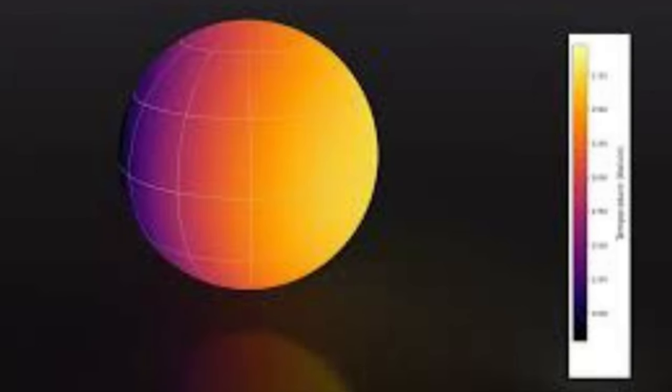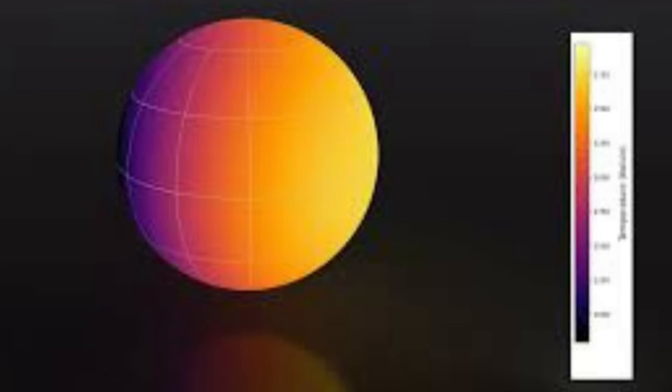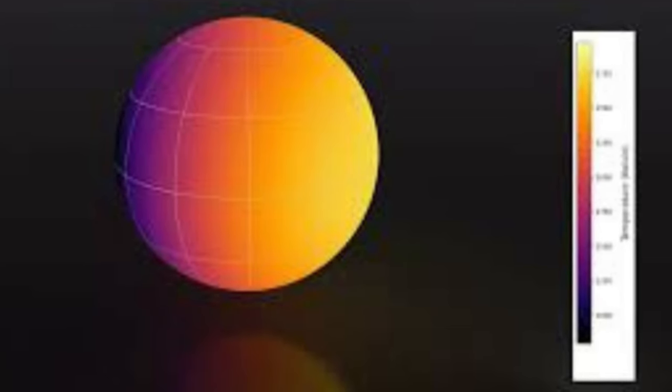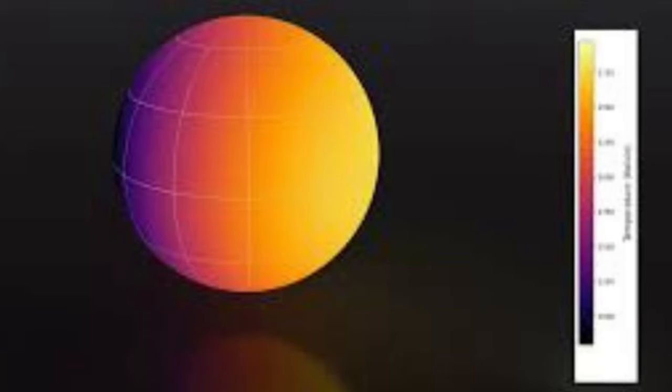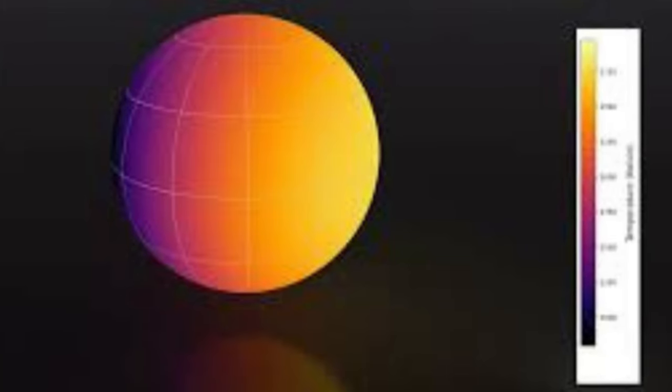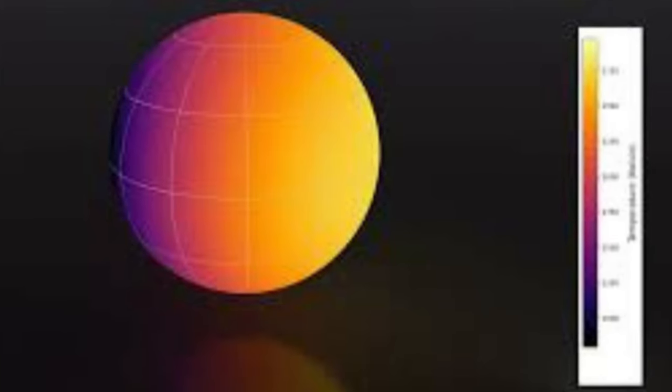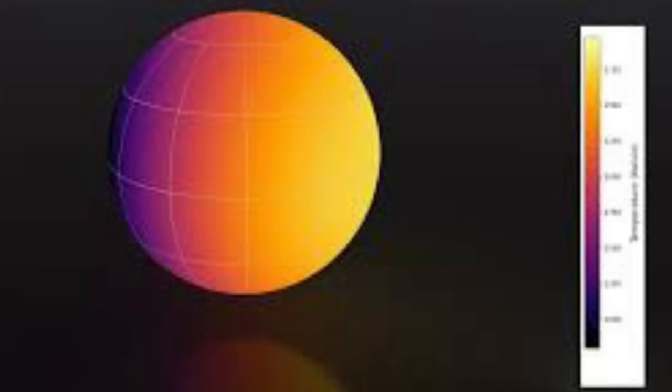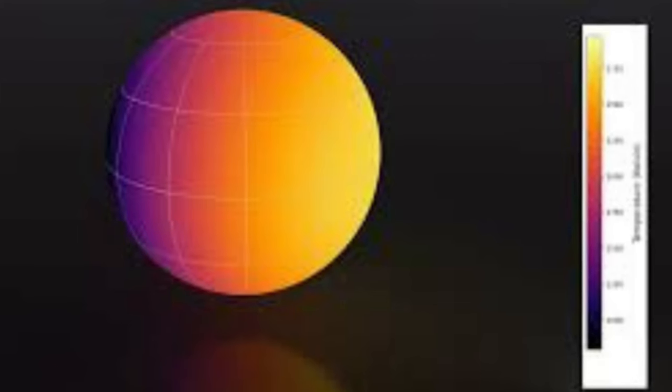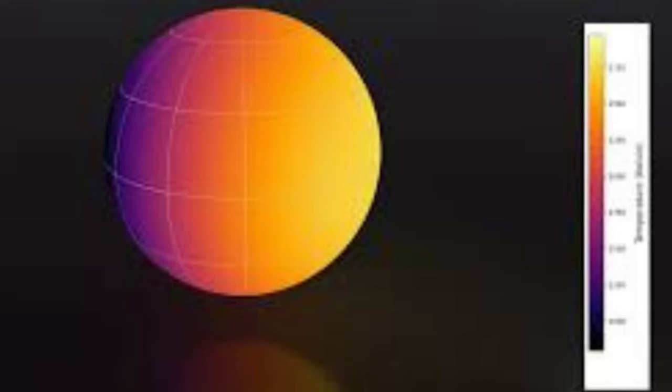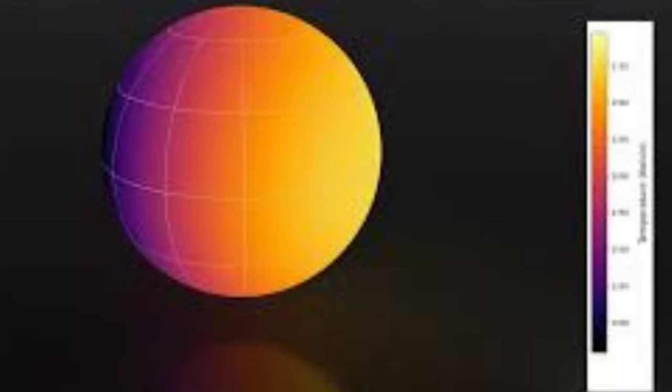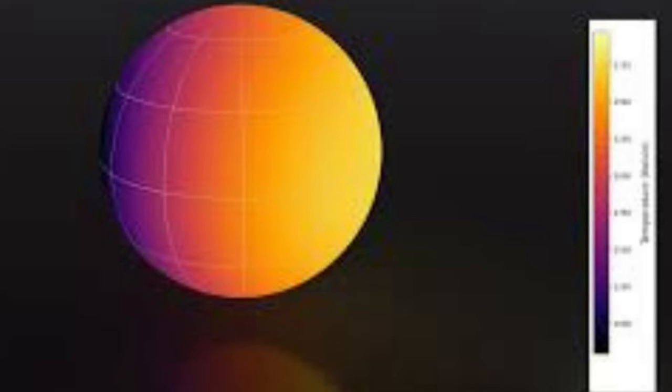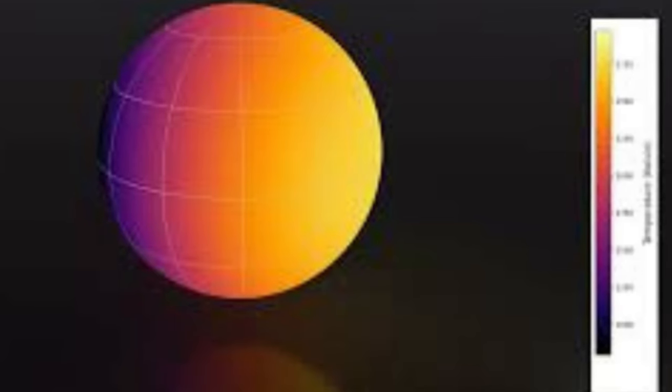The size and proximity of WASP-121b to its host star, WASP-121, place it firmly in the category of hot Jupiters—gas-giant exoplanets on orbits of less than 10 days with their host stars. Of the almost 5,000 exoplanets confirmed to date, over 300 belong to this extreme category, but WASP-121b has been referred to as a prototype for ultra-hot Jupiters.